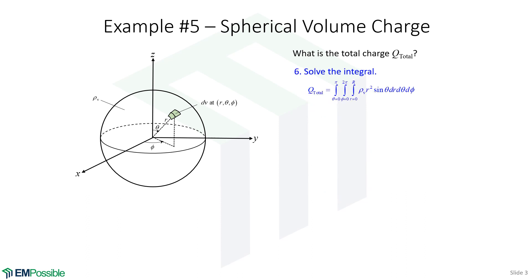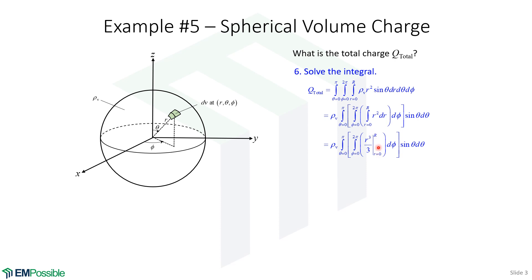Now we want to solve the integral from the previous slide. First, bring any constants to the outside — in this case, rho v. Then I arrange the integrals in a hierarchy: theta, then phi, then r. We can isolate the r integral: integrating r squared dr from 0 to big R. The antiderivative of r squared is r cubed over 3. Evaluating at big R gives R cubed over 3; at 0 gives 0. Those constants come to the outside, giving us R cubed over 3.